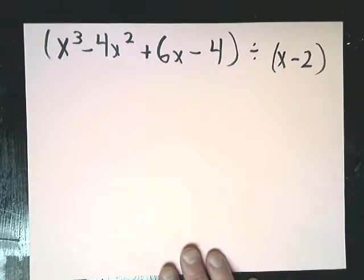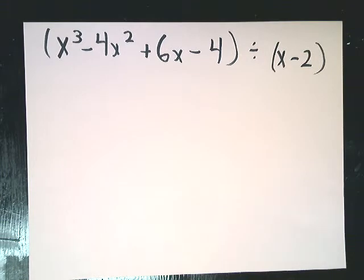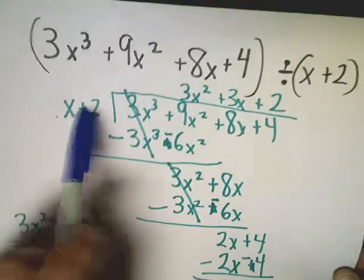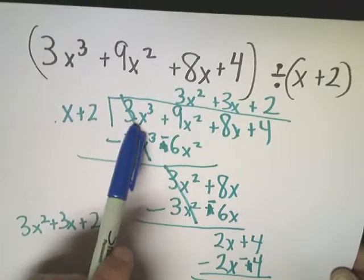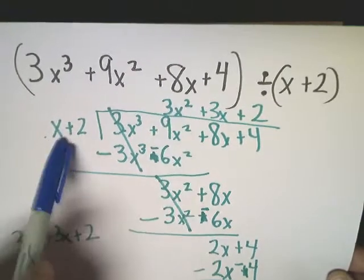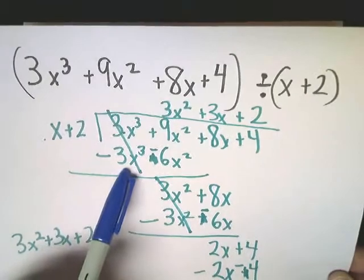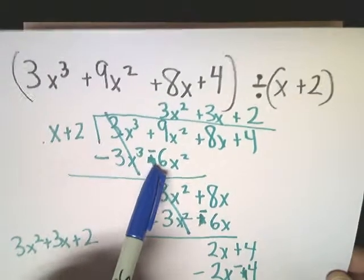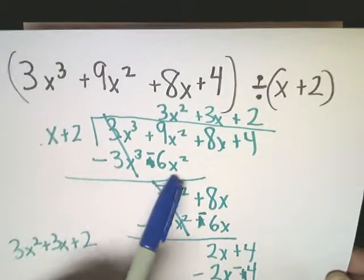Now, if you saw the video that I made on regular long division, let's see if I can bring up part of it. At this point, I would do what goes into 3x to the third? You have to multiply it by 3x squared. So when I did that, it gave me plus 3x to the third and then this times this gave me plus 6x squared.